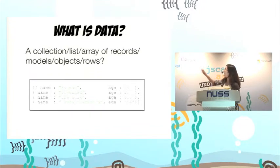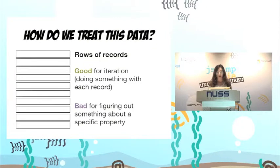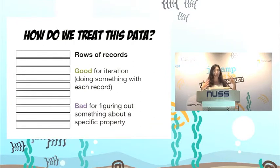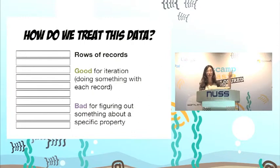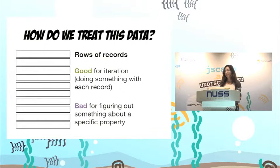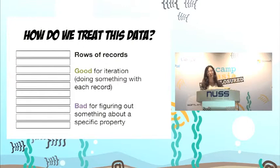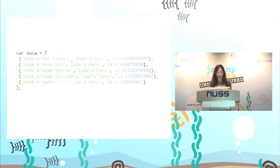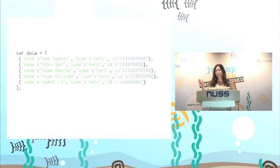There are two ways to treat this data. One is as rows of records — an array of JavaScript objects — which is great when you want to do something with every record. If you're showing a list of items and want to iterate over each one to grab a property and make a list item, that's great. But it's not so good if you're trying to figure out something about a specific property. If you have 100 users and want to figure out their average age, you have to iterate over every single record and grab the age, then compute an average. So row-wise is not ideal if you want to focus on single properties.